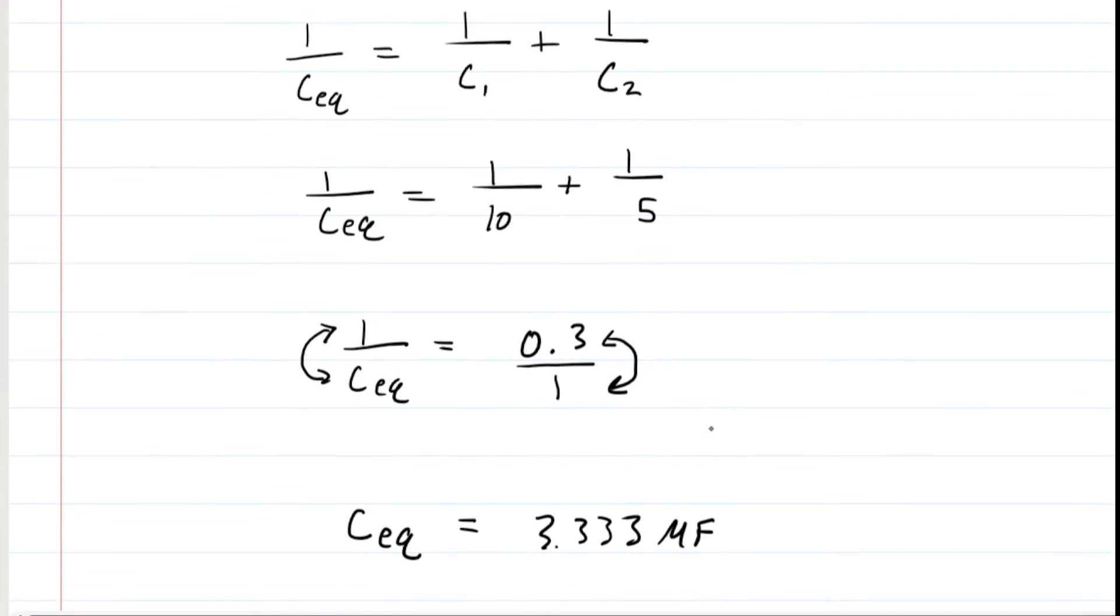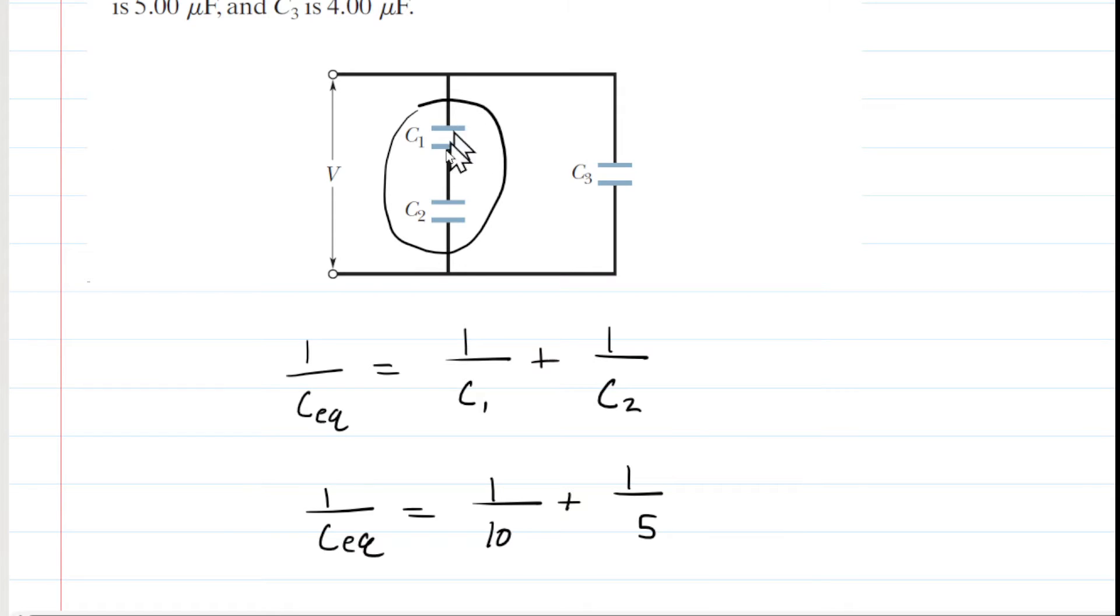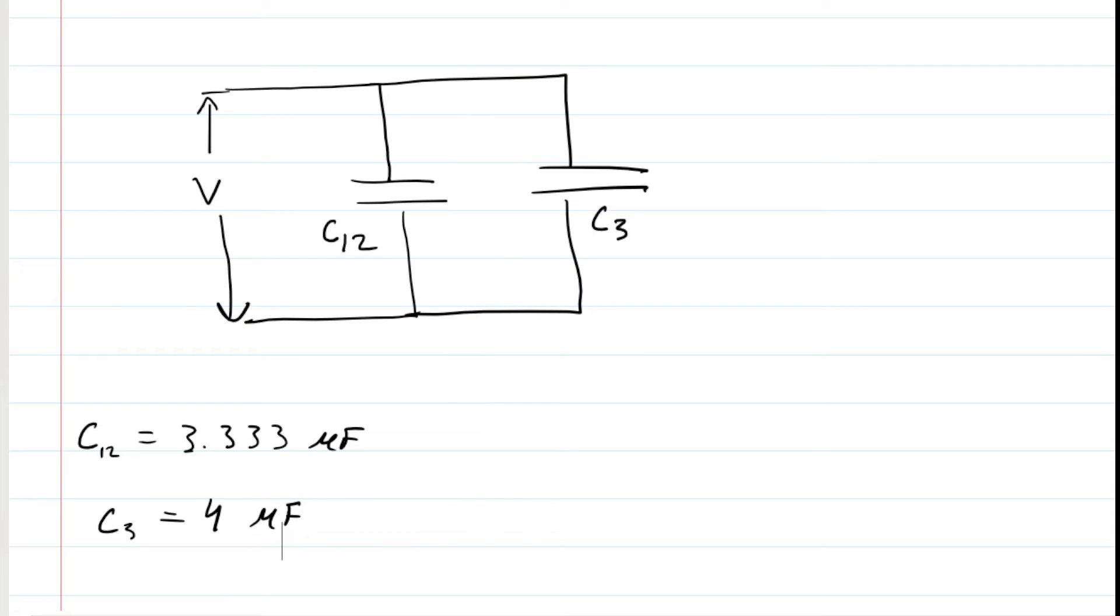That would be the equivalent capacitance of the series arrangement of C1 and C2. Once you combine mathematically the two capacitors, you'd probably want to redraw the circuit. We're going to take C1 and C2 and combine them into an equivalent capacitance that we will call C12.